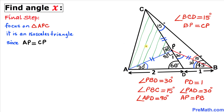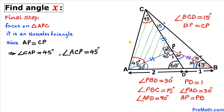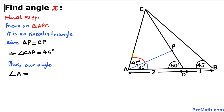For the final step, let's focus on triangle APC. We know that angle APD is 90 degrees. This is also an isosceles triangle since side length AP equals side length CP. Therefore angles CAP and ACP are both 45 degrees each, and the sum of angles confirms 180 degrees. So angle A is the sum of 45 degrees plus 30 degrees.